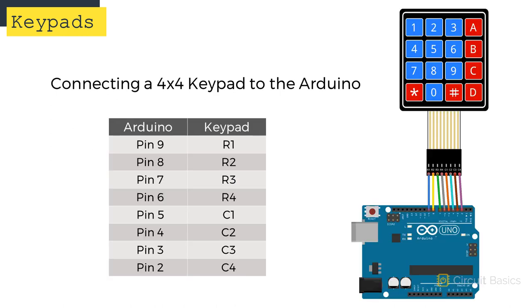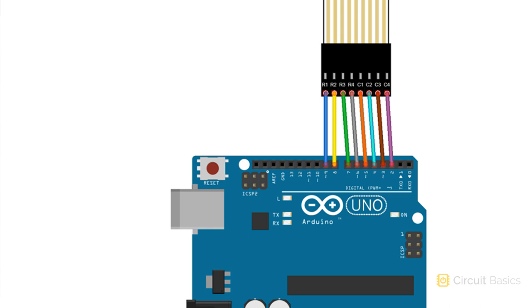Connecting the keypad to the Arduino is easy. On this keypad, the R1 pin is the pin on the left. It connects to the Arduino's digital pin 9. The other row pins connect to Arduino pins 8, 7, and 6. The column pins 1 through 4 connect to Arduino pins 5, 4, 3, and 2.